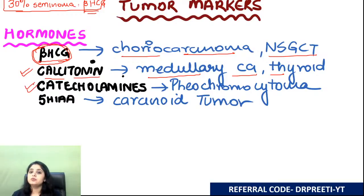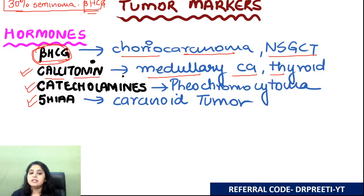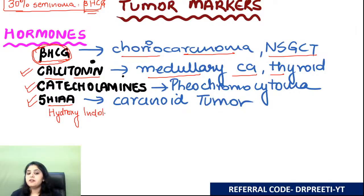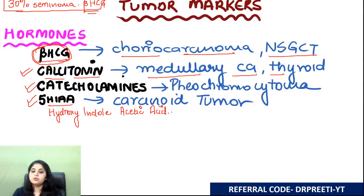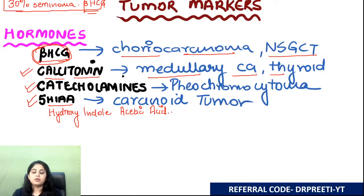Catecholamines are the tumor marker for pheochromocytoma — we'll cover that table today. 5-HIAA (5-hydroxyindoleacetic acid) is a metabolic product of serotonin (5-HT). Since serotonin comes from carcinoid tumors, 5-HIAA is the tumor marker for carcinoid tumor. That covers the hormones category.